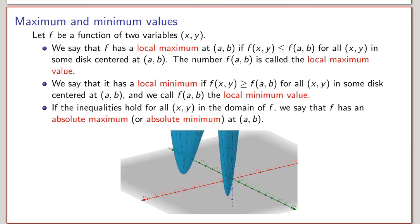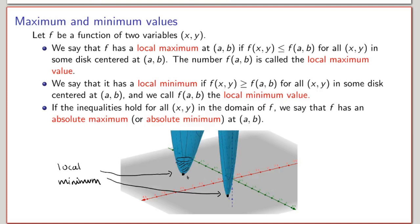Going back to the graph of the function from the previous slide, I've zoomed in near the two points I expected to be minima. For one of them, I can find a disk such that for all (x, y) in this disk, the value f(x, y) is greater than or equal to the value at (a, b), confirming it is a local minimum. The same is true for the other point. It turns out that for the function graphed here, these two points are actually absolute minima.